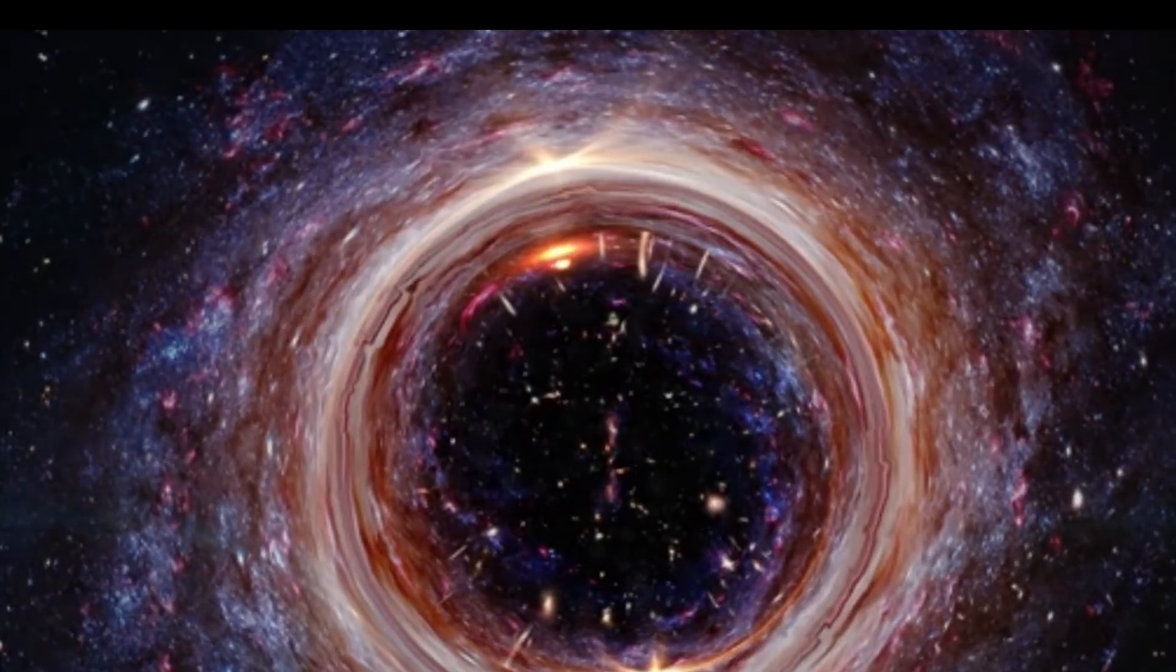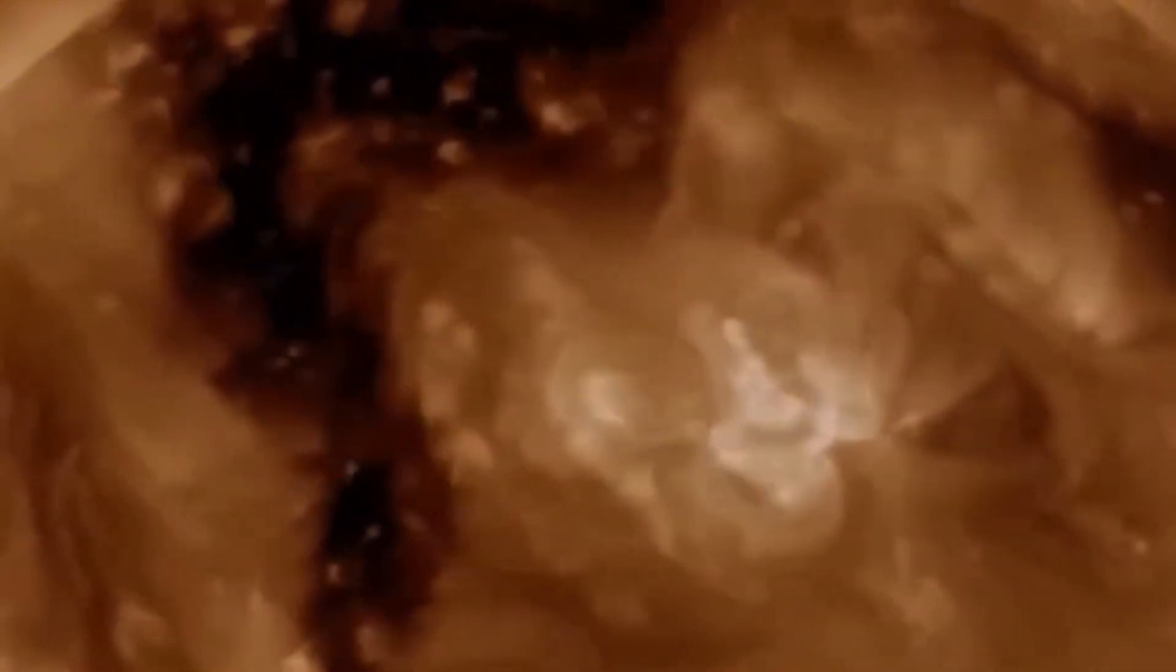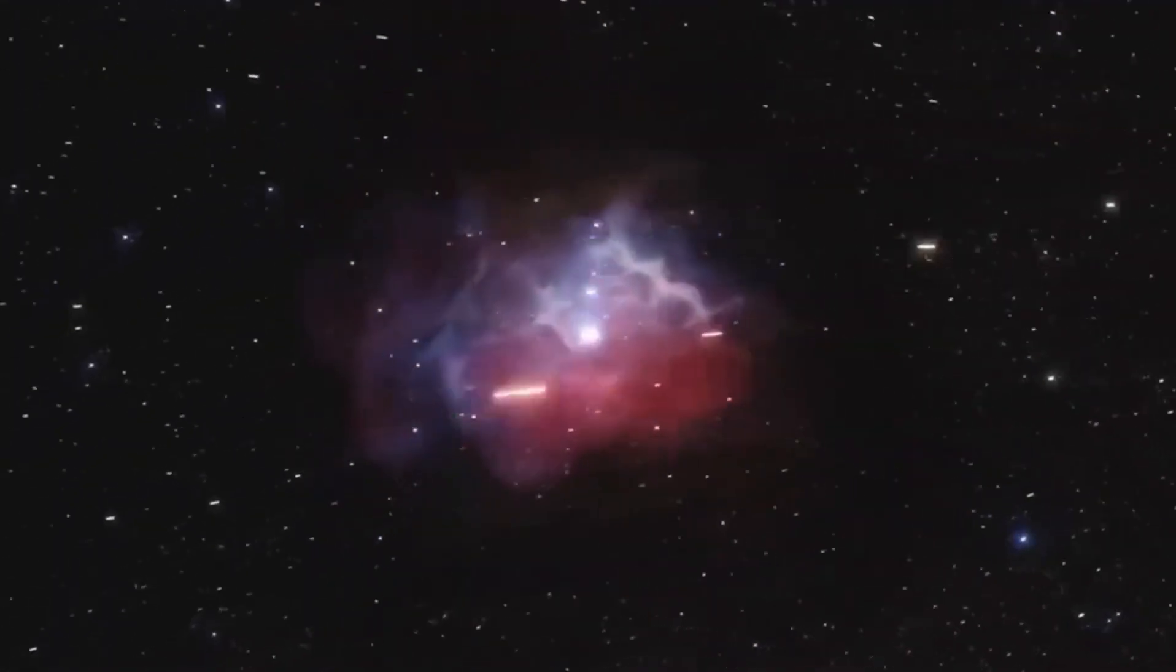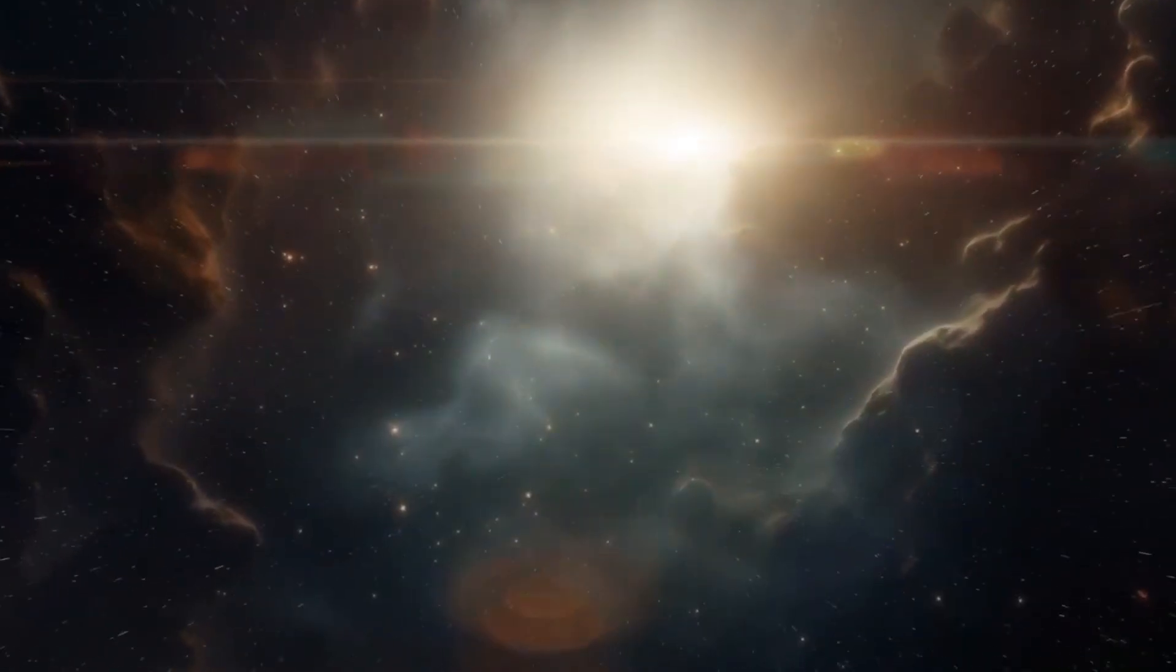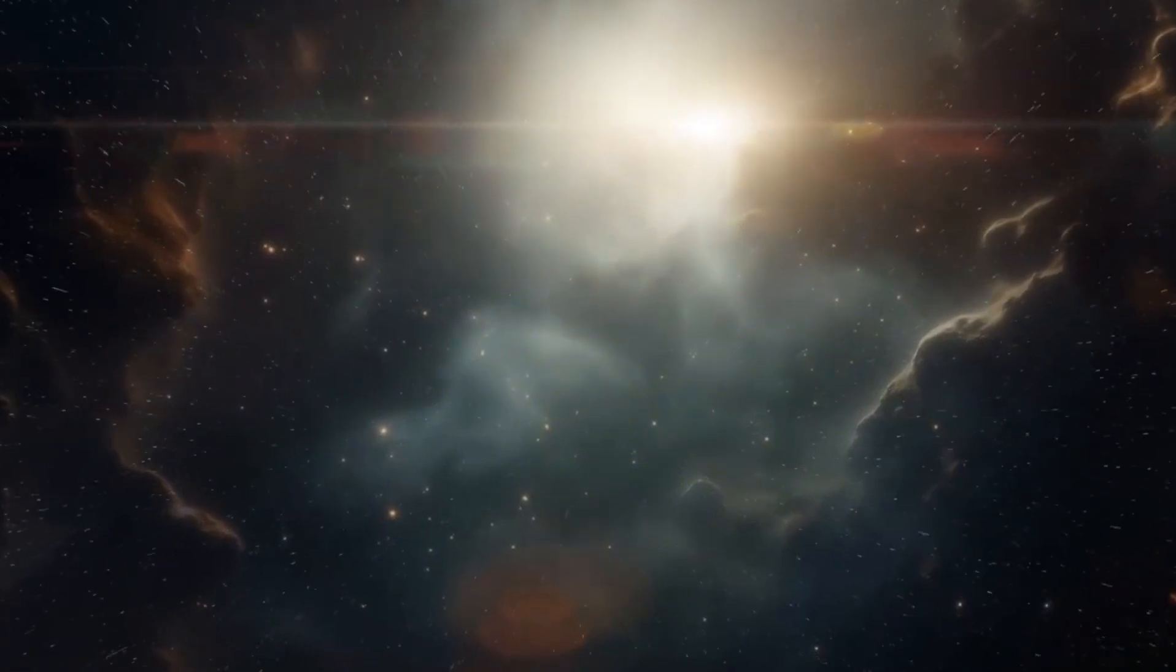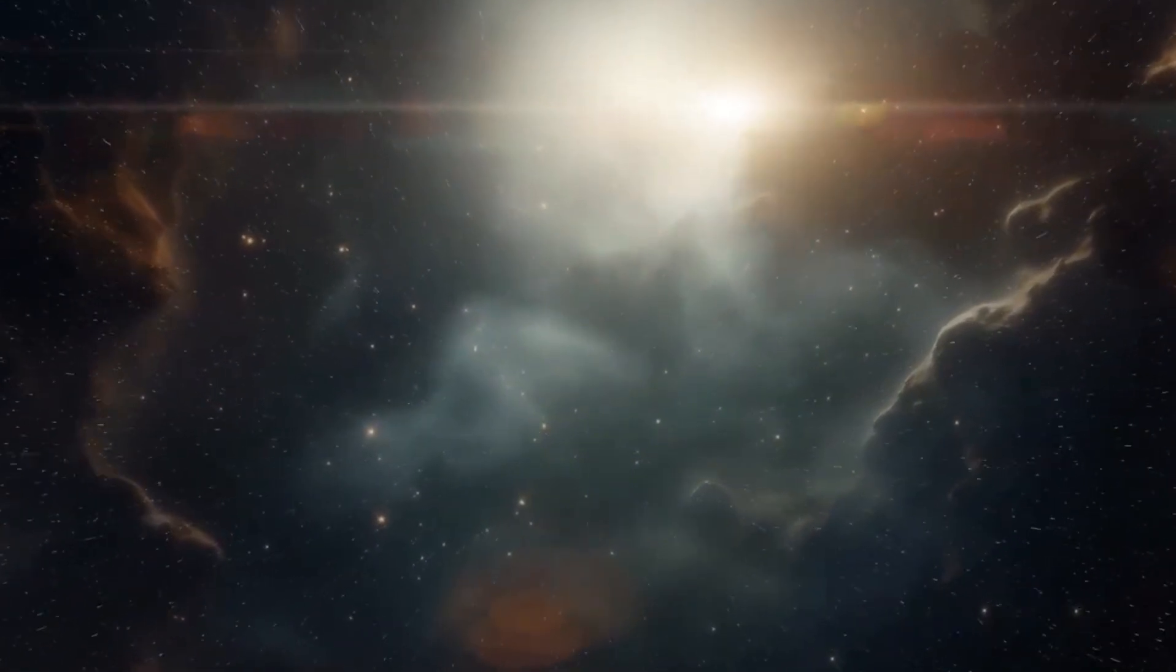Now, what remains after a Type II supernova, like the one Betelgeuse is expected to experience, depends on the amount of material left behind. It could collapse into a neutron star or, if there's enough material, transform into a black hole. Both scenarios are rare, especially considering Betelgeuse's proximity. If it becomes a neutron star, it would be one of the closest to Earth. And if it becomes a black hole, it would hold the title of the closest one for quite some time.